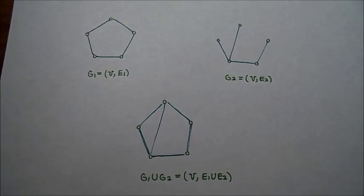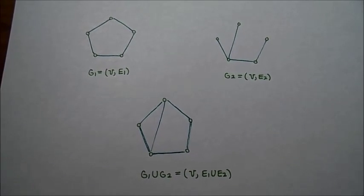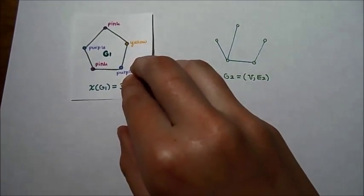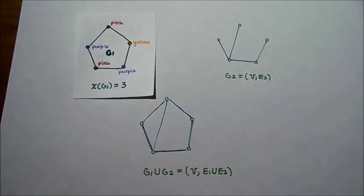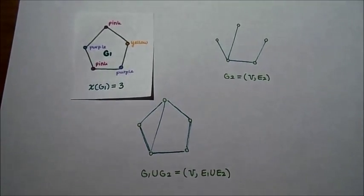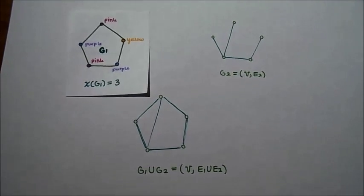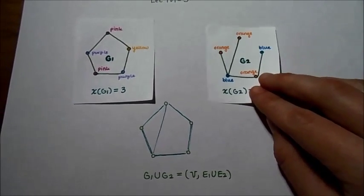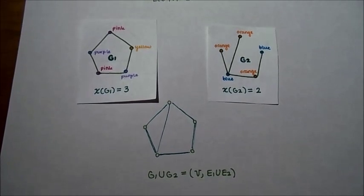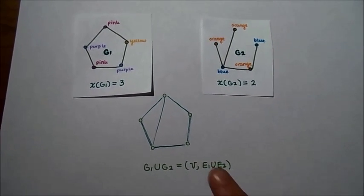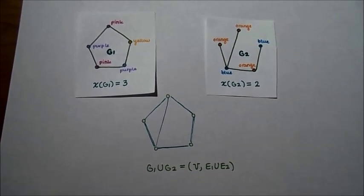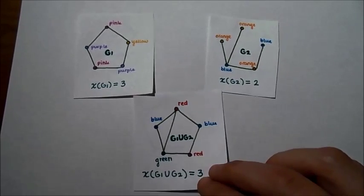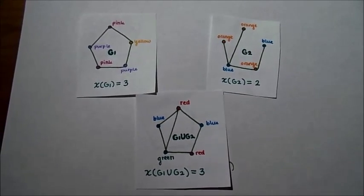Now let's find the minimum number of colors required for the graphs in our example. For G1, the minimum number of colors required is three, since it's a cycle on an odd number of vertices. For G2, the tree graph, the minimum number of colors required is two. And for the new graph G1 union G2, the minimum number of colors required is also three.